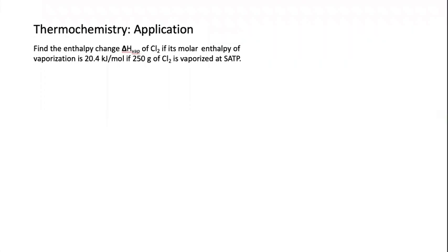Thermal chemistry application. Find the enthalpy change Delta HVAP, which means vaporization of chlorine. If the molar enthalpy of vaporization is 20.4 kilojoules per mole, if 250 grams of chlorine is vaporized at SATP, standard ambient temperature and pressure.